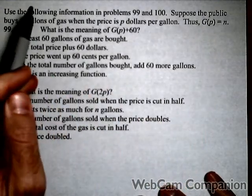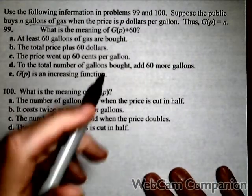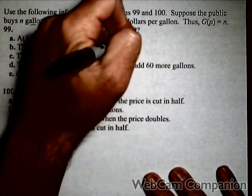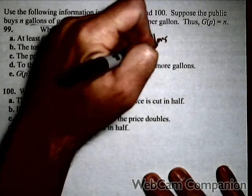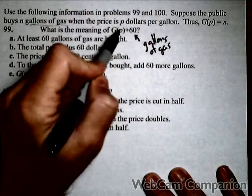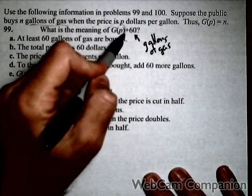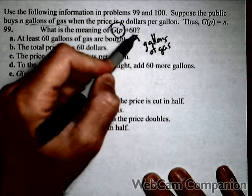which is gallons of gas. And then we're adding 60 to it. So 60 must also be gallons of gas. So however much gas the public is purchasing, which is G(p), we are going to add 60 gallons to that.